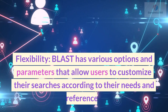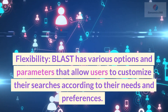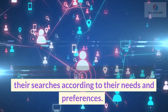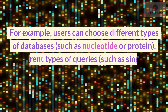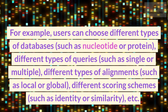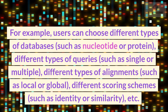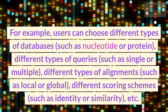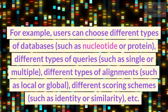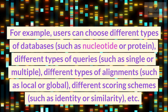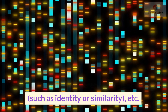Flexibility: BLAST has various options and parameters that allow users to customize their searches according to their needs and preferences. For example, users can choose different types of databases, such as nucleotide or protein, different types of queries, such as single or multiple, different types of alignments, such as local or global, different scoring schemes, such as identity or similarity, etc.